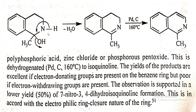Further, aromatization takes place by the removal of H₂O, which consists of H from the nitrogen of the amino group and OH from the reduced product of the keto group. This leads to loss of H₂O and a partially aromatized product is formed. This product then undergoes full aromatization in the presence of palladium at 160°C to form isoquinoline.